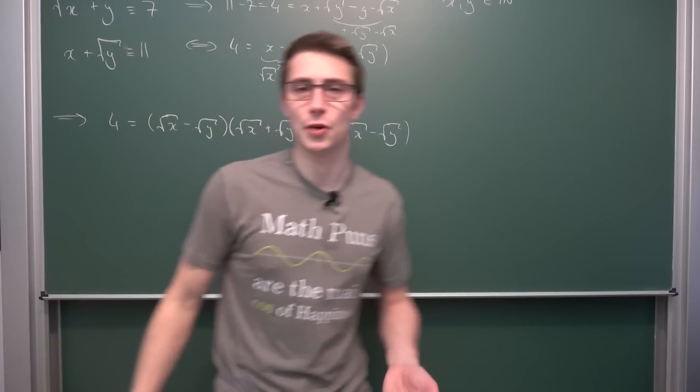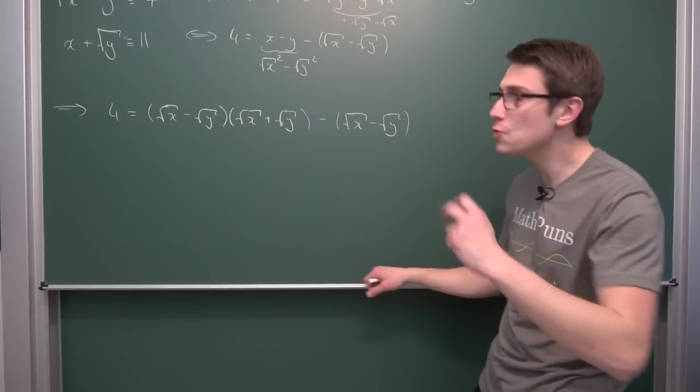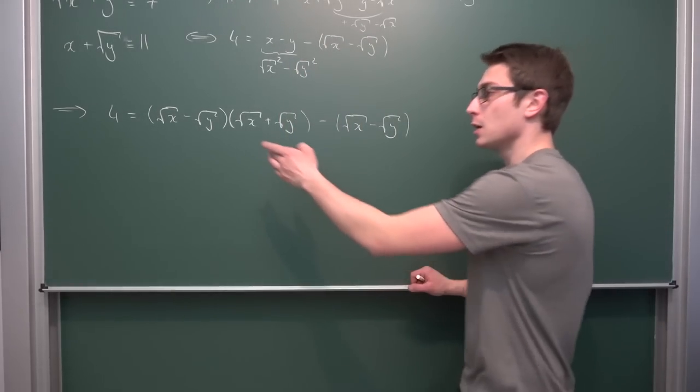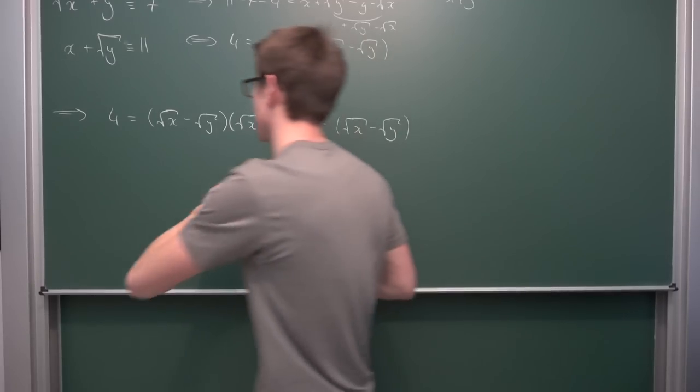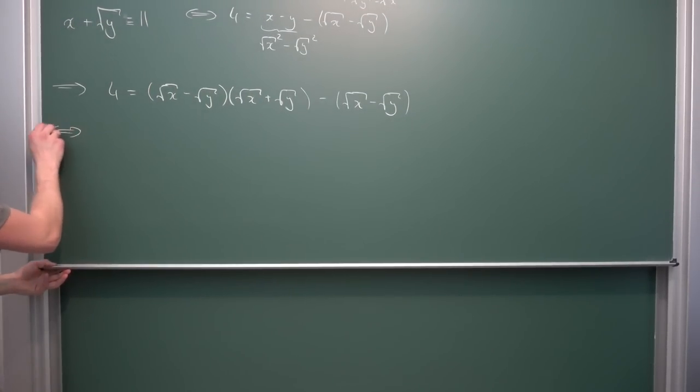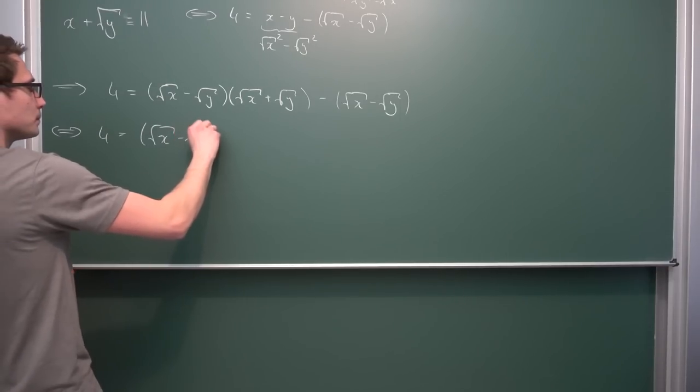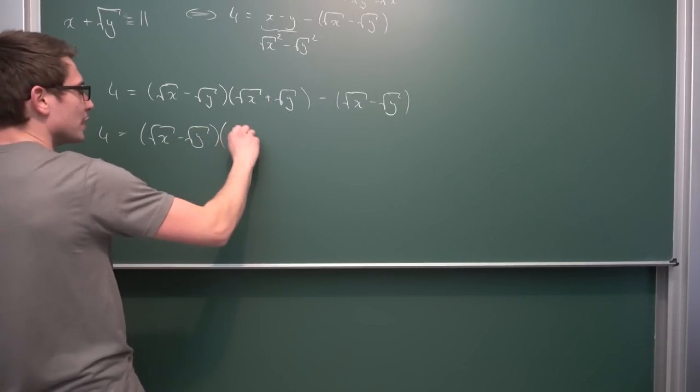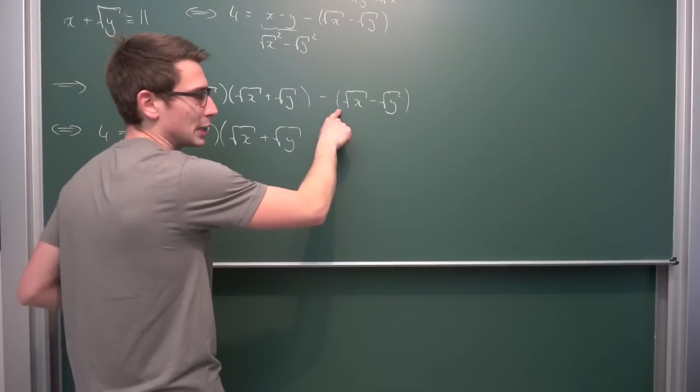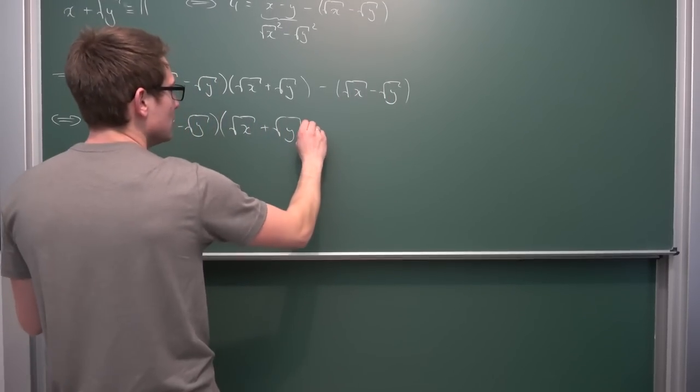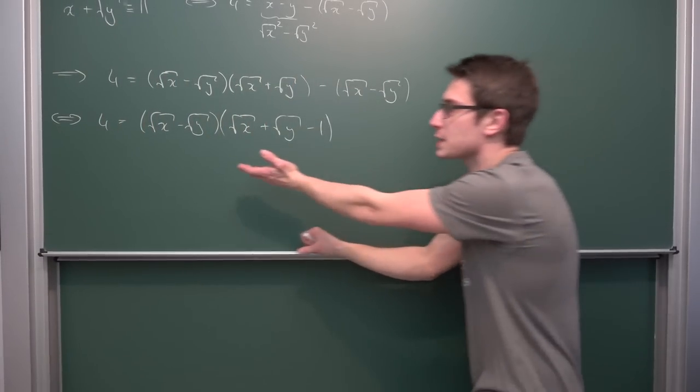Here's where the real magic happens: we can now factorize the number four into two linear factors. We're going to factor out square root of x minus square root of y on both summons, giving us 4 equals square root of x minus square root of y, times the square root of x plus the square root of y minus one. This is very good.